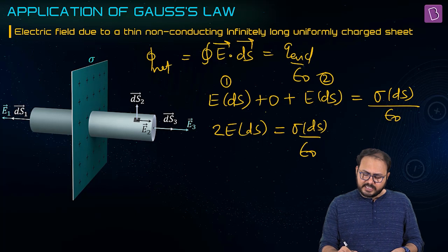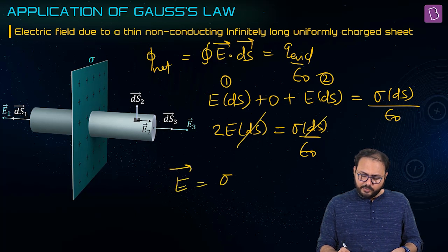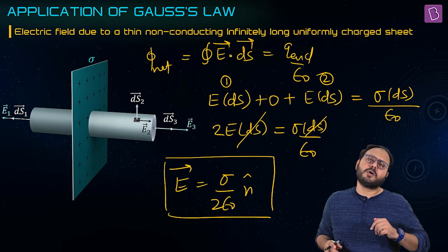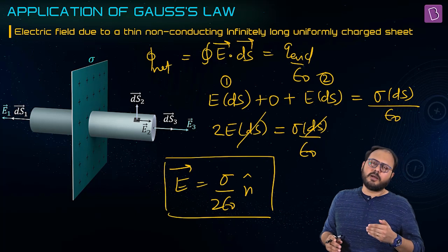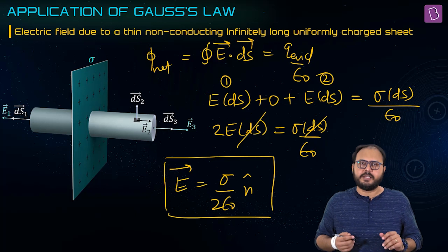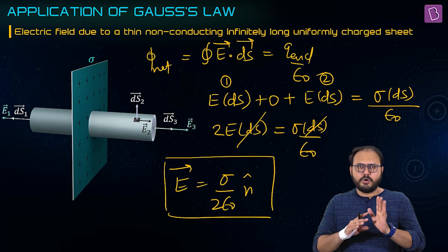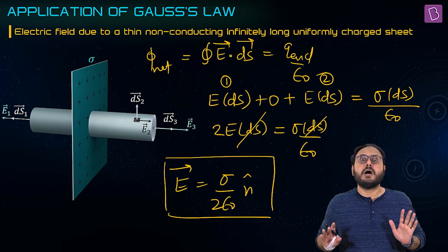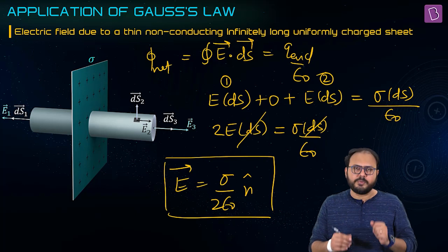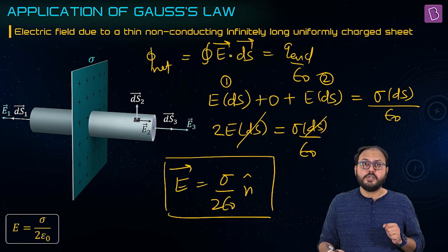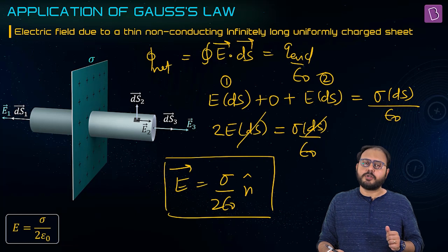ds and ds cancel. So E is coming out to be sigma by 2ε₀ n̂. That's constant. How can it be constant? If you go very far — but you cannot go very far, it's infinite. If your sheet is infinite for you and it's non-conducting, the formula is sigma by 2ε₀. It's a uniform field — it's very, very important to know that.